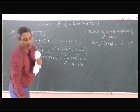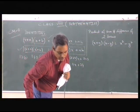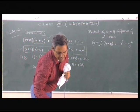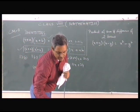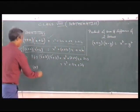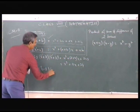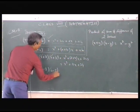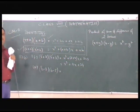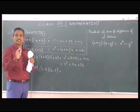Part 4 of Exercise 12A, Question 1: (b − 3) into (b − 5). Now don't get confused with the minus sign.